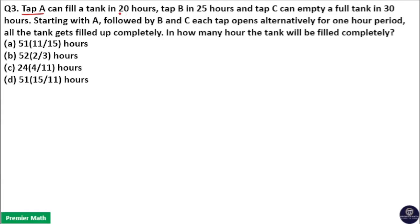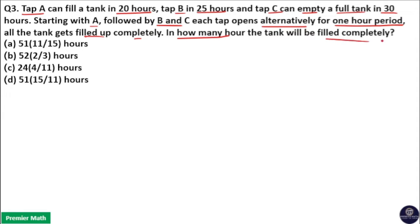Tap A can fill a tank in 20 hours, Tap B in 25 hours, and Tap C can empty a full tank in 30 hours. Starting with A, followed by B and C, each tap opens alternatively for one hour period until the tank gets filled up completely. In how many hours will the tank be filled completely?